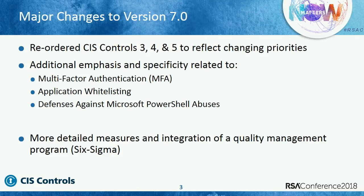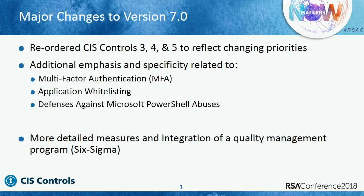One of the nice things about the controls is that it's prioritized. We say the first six controls are really where organizations need to start. However, we did some slight reordering in terms of where secure configuration falls. Previously it was control three — we've now moved it to control five, after vulnerability assessment and control of administrative privileges. The reason is very pragmatic: if all your users are admins, they can change whatever configuration they want anyway. So you might want to make sure you can address administrative use first, and then these other things will fall alongside.